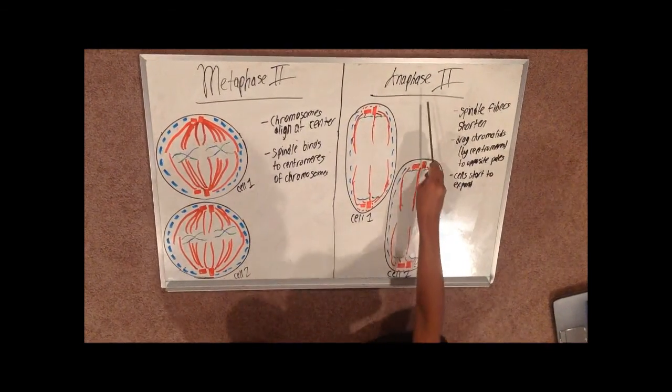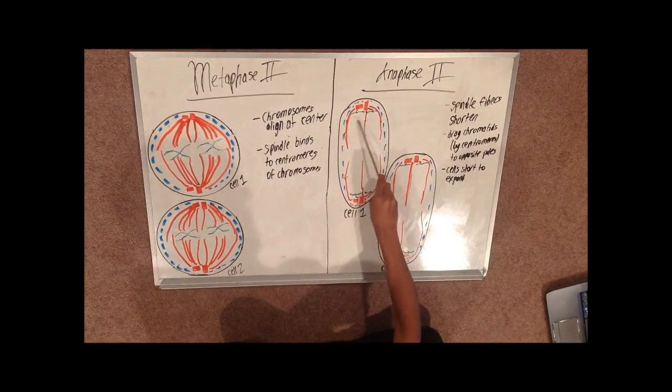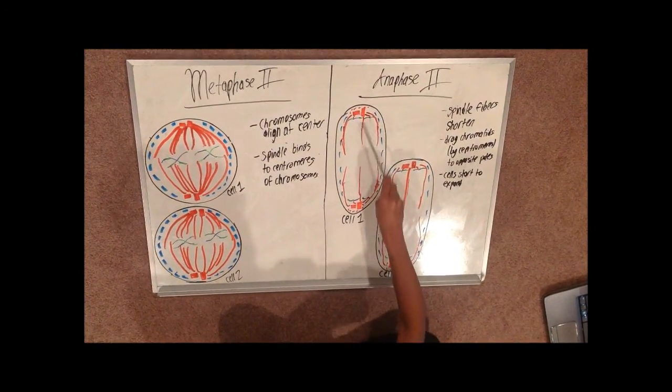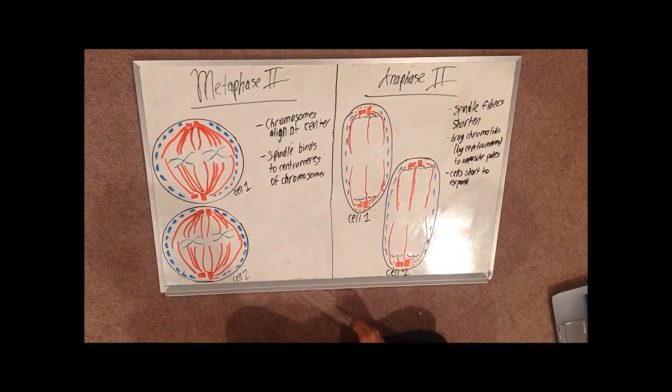After that, there's anaphase 2. The spindle fibers are shortened and grab chromatids by the centromeres to opposite poles of the cell, and the cell starts to expand, getting ready for division.